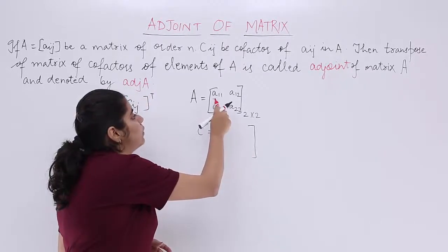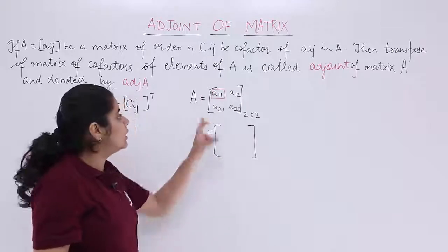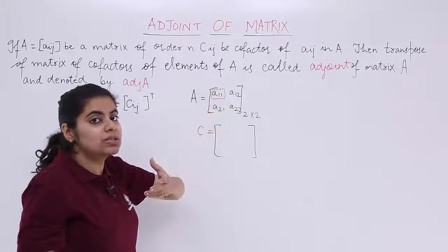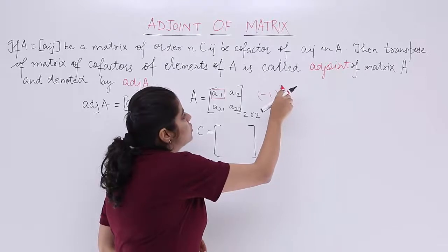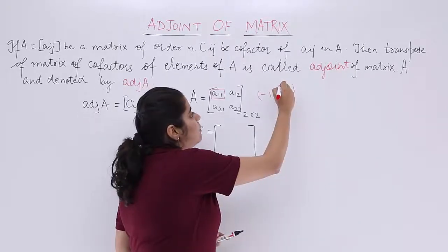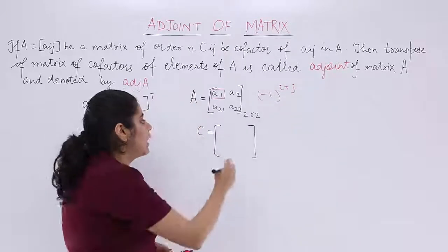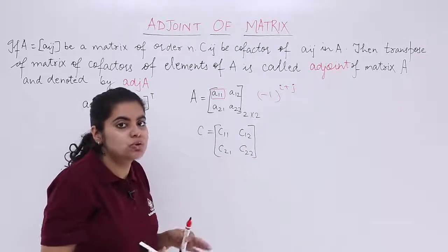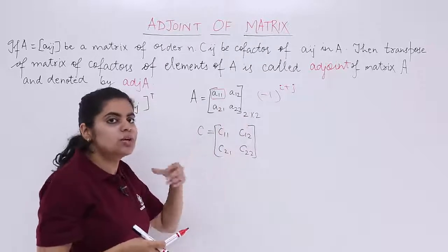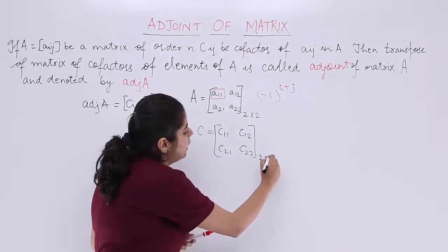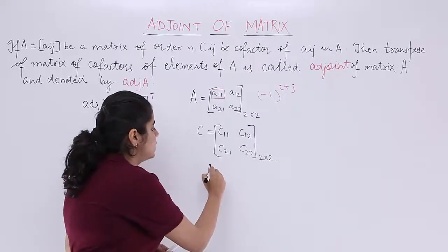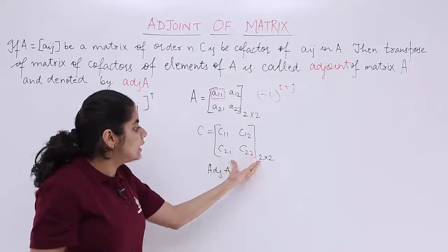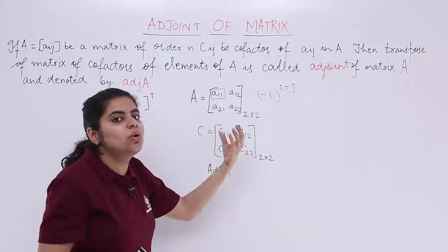The cofactors — suppose I want to calculate the cofactor for a11, I will be leaving the row and the column, and I get a22. That a22 will be taken into consideration with the sign also: minus 1 raised to the power i plus j is the formula for cofactors. That means we will have values C11, C12, C21, C22. The values may be something like minus A22. The adjoint is calculated as the transpose of the cofactor matrix.